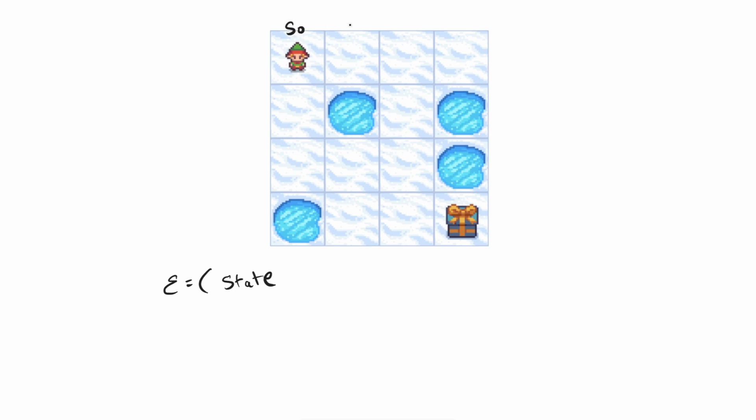I'm going to label the cells as S0, S1, S2, S3. This is going to be S4 all the way to S15. Let's say the first action that the elf takes is going to the right. So my current state is S0. The action that the elf took was to go to the right. The new state that the elf arrived to is state 1. And then the reward that the elf received.